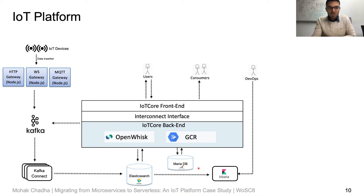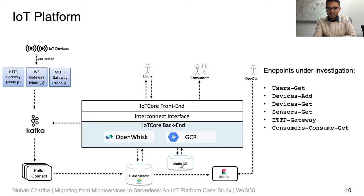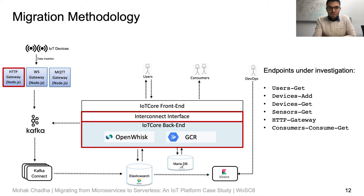The stored sensor data can also be visualized using Kibana. The IoT platform provides several API endpoints that enable users and consumers to interact with the platform and perform CRUD operations. In this work, to minimize code changes, we do not migrate the different off-the-shelf software components. We only focus on adapting and migrating the IoT backend component and the HTTP gateway, and completely decompose the different API endpoints in the backend onto OpenWhisk and GCR, focusing only on the six mentioned endpoints.